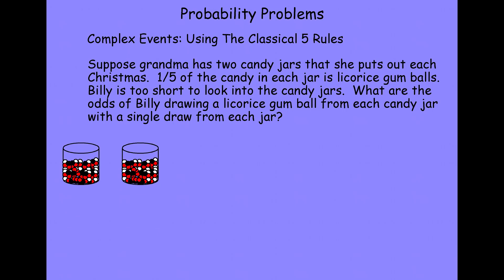We have our two jars here. Billy's going to reach into the first jar and grab a piece of candy. In order for our event to occur, he's got to grab a licorice gumball. He's going to reach into that second jar and grab a piece of candy. In order for our event to occur, he's got to grab a licorice gumball. What are the odds of him grabbing a licorice gumball on the first and a licorice gumball on the second?